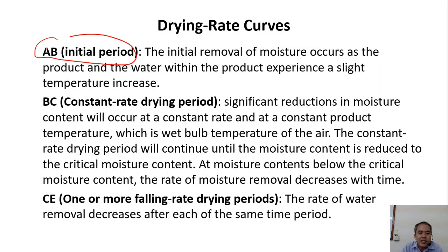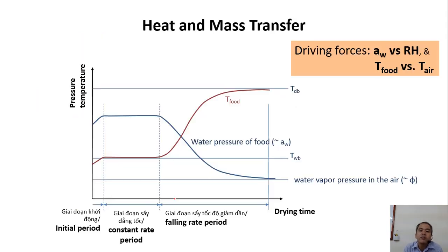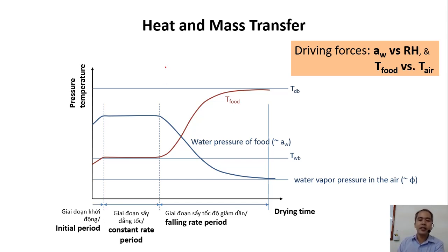The initial period A to B is where the food needs to warm up before it starts to evaporate water. Then there is the constant rate period, and then the falling rate. Drying is a heat and mass transfer process simultaneously — both exchanges happen at the same time.